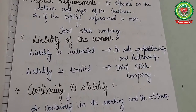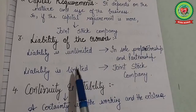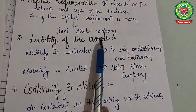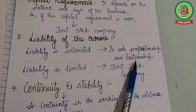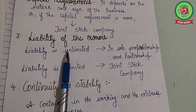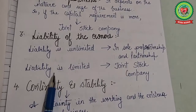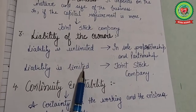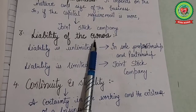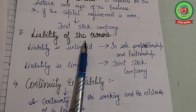The next factor is liability of the owners — the extent to which the person can be held liable. In sole proprietorship and partnership firms, the liability is unlimited, but in a joint stock company the liability remains limited. The extent of liability is an important point while selecting a form of business organization.